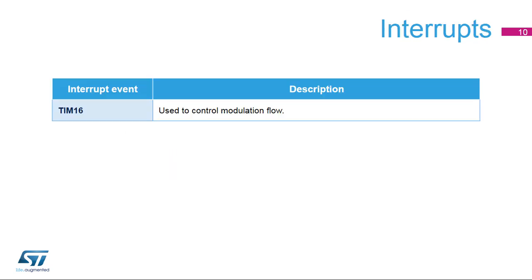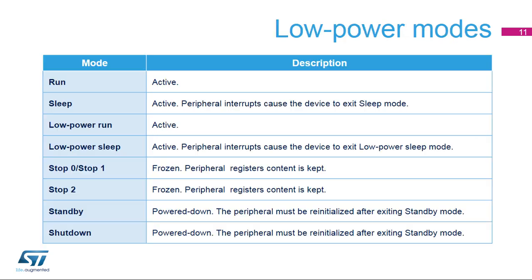No interrupt is associated directly with the infrared timer. However, the timer 16 interrupt is used to control the modulation of the output signal. The infrared timer can be active only in run and sleep modes. In all other low-power modes, including stop, standby, and shutdown modes, the infrared timer must be disabled.